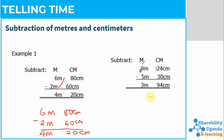Our answer for the centimeters is nine. Because we borrowed one from the meters column, which had nine, it now remains eight. So eight minus five gives us three meters. The final answer is three meters and nine centimeters — remember to write the units: meters and centimeters.